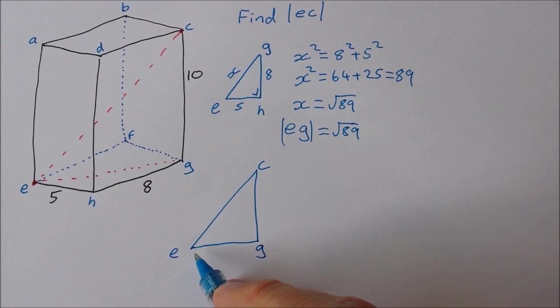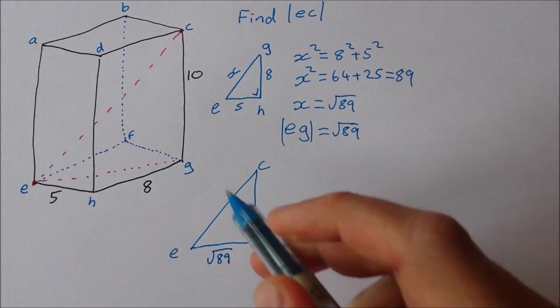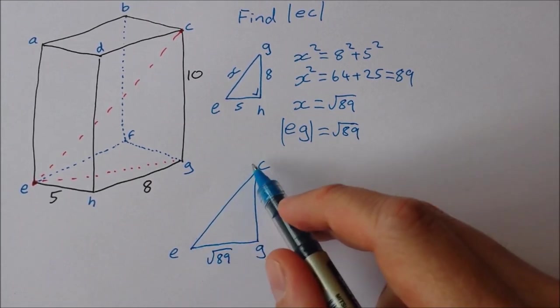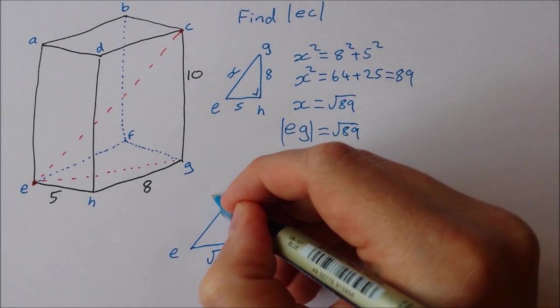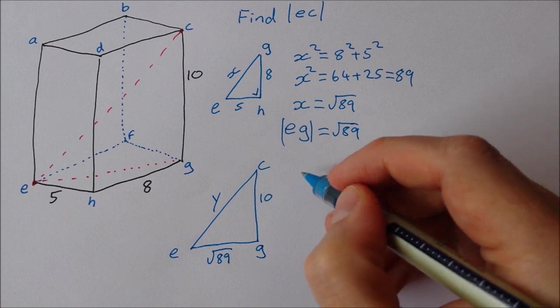Now the length EG I just found is root 89. The length GC is 10. And now this one here is my unknown. I'll call it Y this time so we don't get confused with X. So I'm solving for Y.